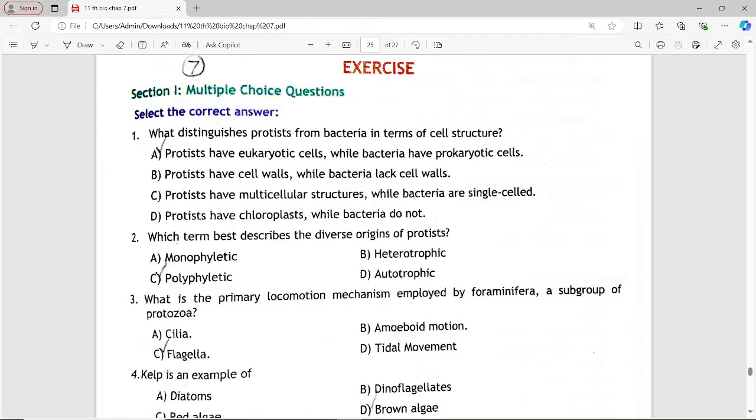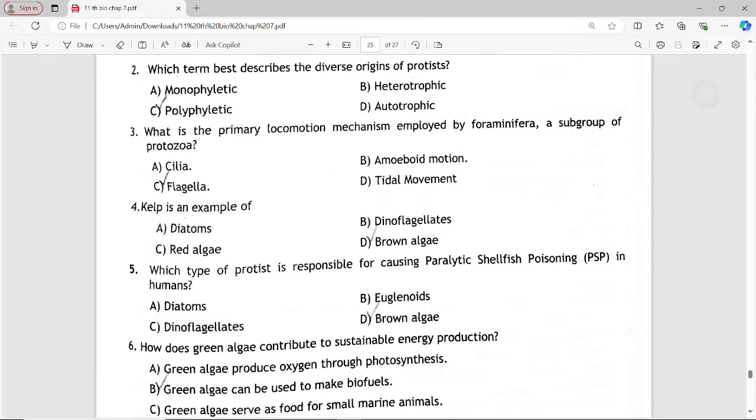Next MCQ: Which term best describes the diverse origin of protists? Options are: monophyletic, heterotrophic, polyphyletic, autotrophic. Answer is option C: polyphyletic.